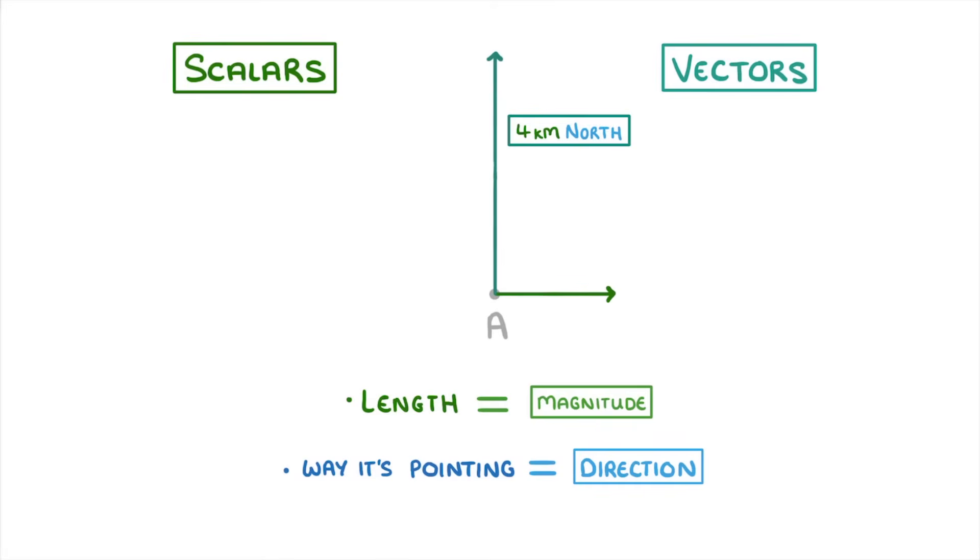So 4 kilometers north would look like this, whereas 2 kilometers west would be like this, because it's pointing to the left, and it's only half the size of the 4 kilometer one.